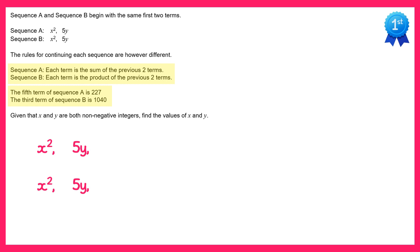So let's continue the first sequence up to the fifth term. Remember we're adding the previous two terms, so if we add x squared and 5y we just get x squared plus 5y. If we add the previous two terms we add 5y and x squared plus 5y, which is x squared plus 10y.